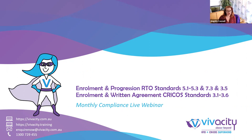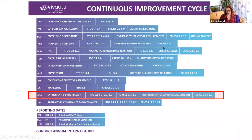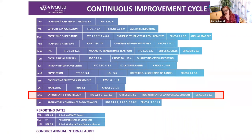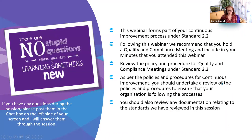This is our second last webinar for the year on compliance. The next one will be around regulatory compliance and governance. Today's session is on enrolment and progression, covering standards 5.1, 5.3, 7.3, and 3.5. For the CRICOS standards, we'll be looking at recruitment of overseas students and standards 3.1 to 3.6. This webinar forms part of your continuous improvement process as set out under standard 2.2 within the standards for RTOs.